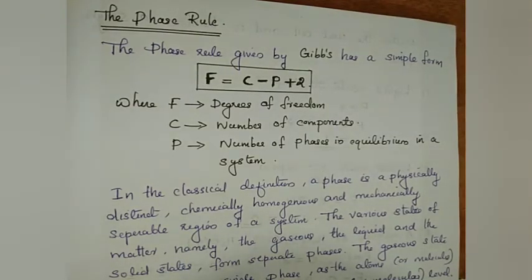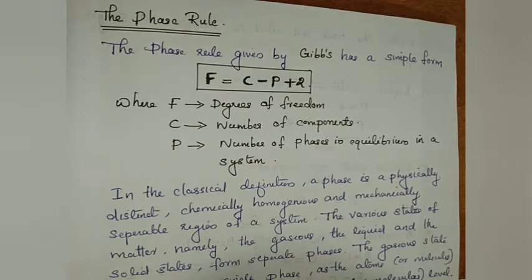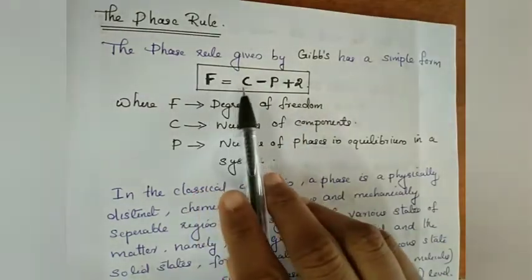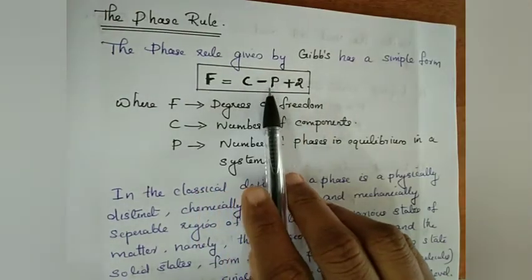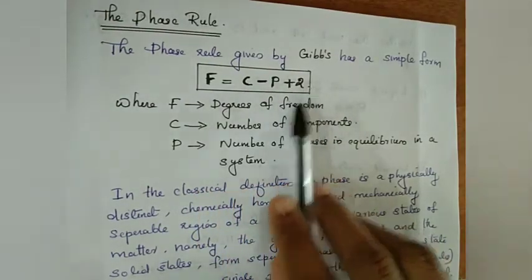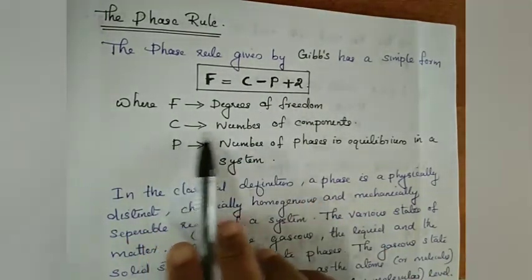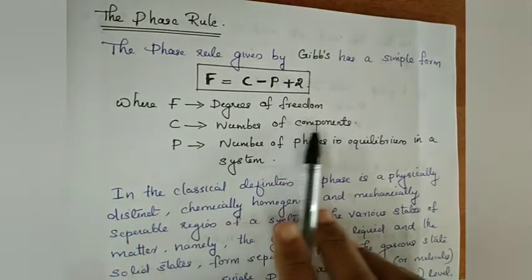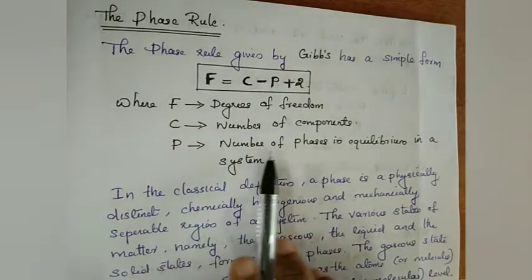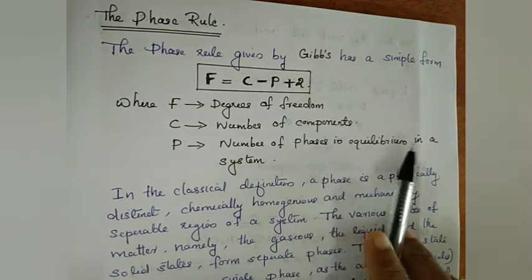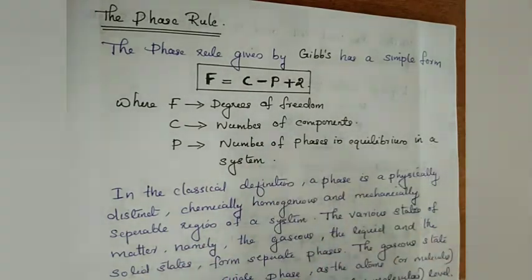The phase rule. In order to find out the degree of freedom, we have a rule known as the phase rule. The phase rule is given by F = C - P + 2, where F is the degrees of freedom, C is the number of components, and P is the number of phases in equilibrium in a system.